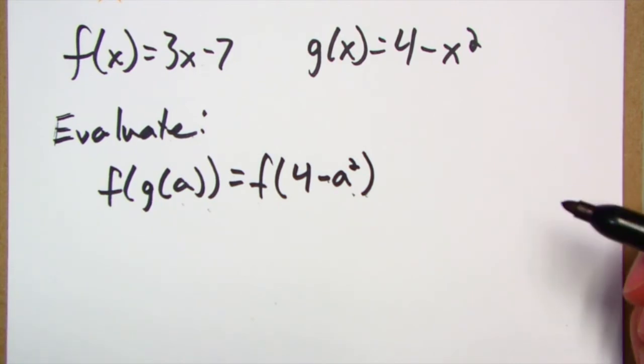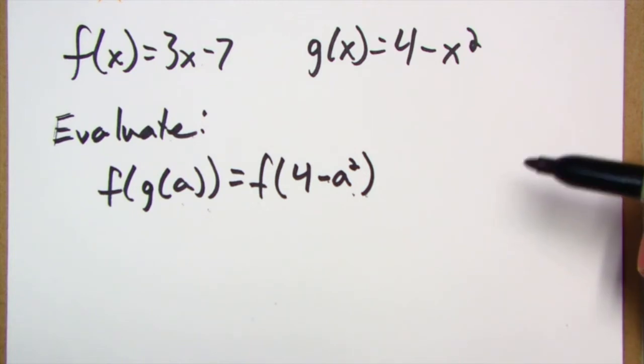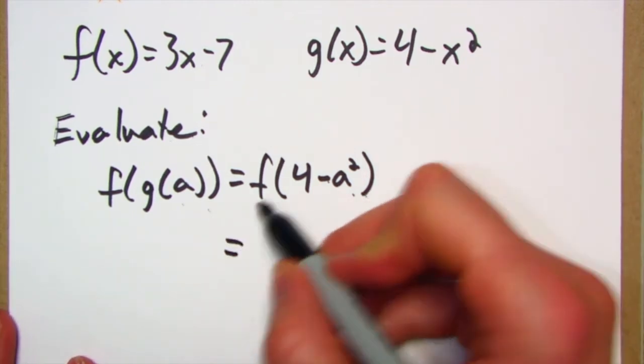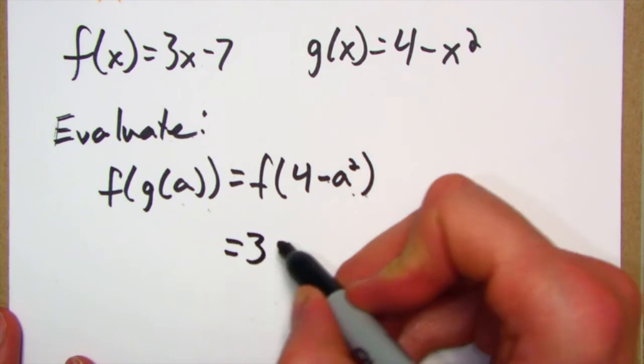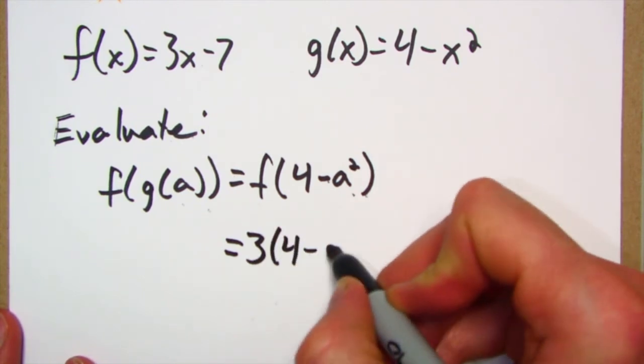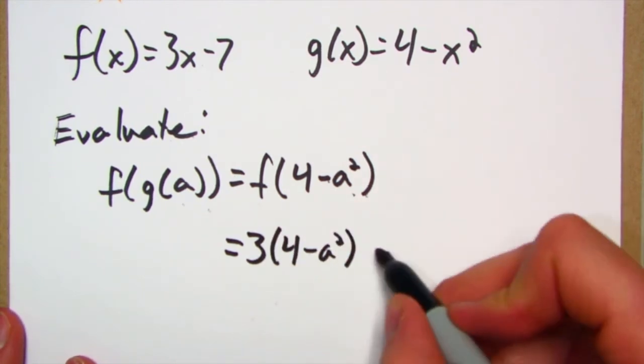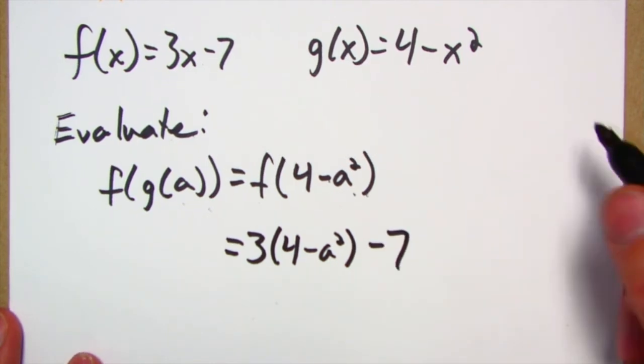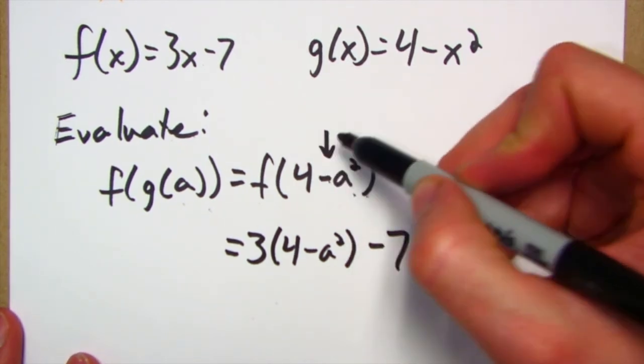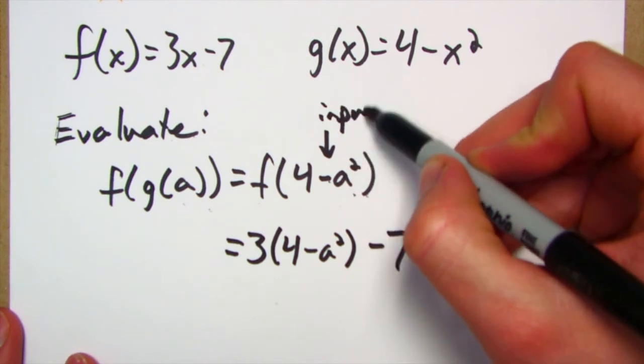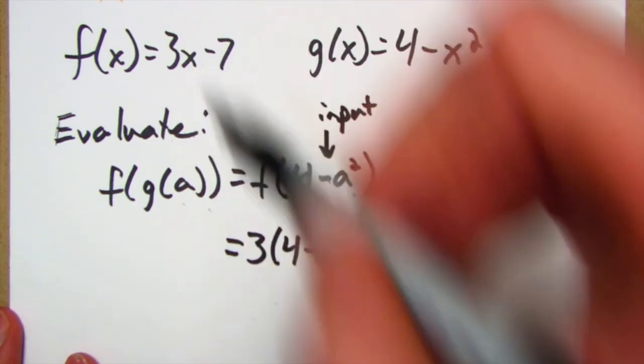How am I supposed to do f of that? That doesn't make any sense. Sure it does. f of that is I'm going to do 3 times that stuff and then I'm going to subtract 7. Okay, remember this is my input, the whole thing.